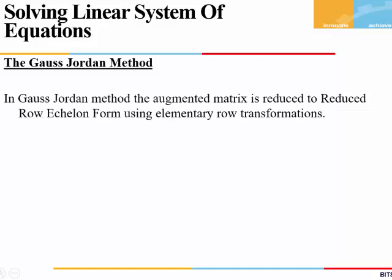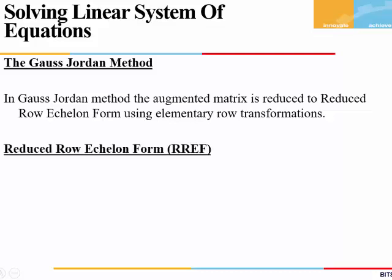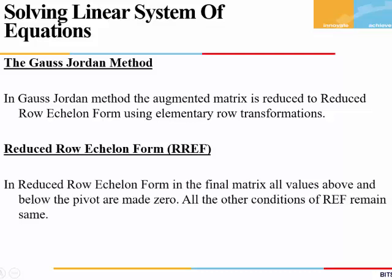In the Gauss-Jordan method, we will first form the augmented matrix and then reduce it to the Reduced Row Echelon form — also called the RREF form — using elementary row transformations. In this form, we make sure that all the values above and below the pivot in the final matrix are 0. All rows with zero entries come at the end, and the pivot is in the next column for each successive row.